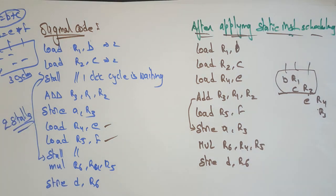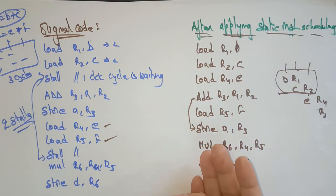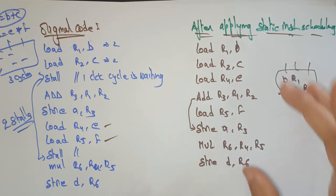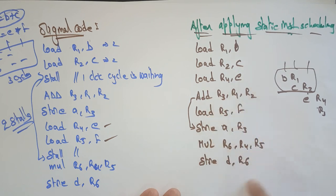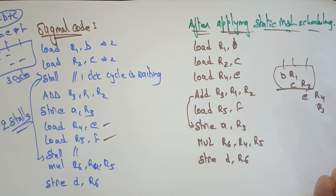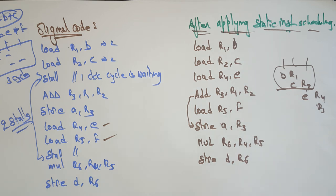This is about static scheduling. Why do we go for dynamic scheduling? Suppose dependencies are unknown at compile time — the compiler is not able to detect any dependencies. In that case, we go for dynamic scheduling. If dependencies are unknown at compile time, dynamic scheduling is used. In the next video, I'll explain what exactly dynamic scheduling is. See you guys, thank you.